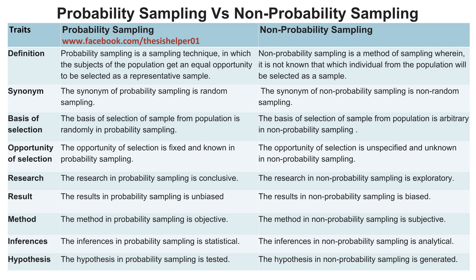The inferences in probability sampling are statistical, whereas the inferences in non-probability sampling are analytical.